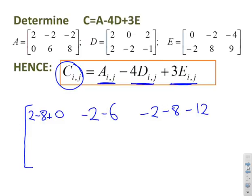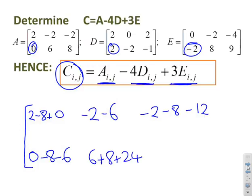Now if I do the bottom row, starting with these coefficients, the A is 0, minus 4D gives me -8, plus 3E gives me -6. Then I move to the 2,3 position: 6 plus 8 plus 24. The final one: 8 plus 4 plus 27. So a bit tedious but straightforward.